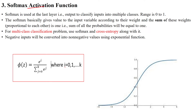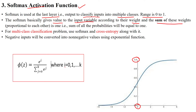The third one is the softmax activation function. The softmax layer is used as the output layer in neural networks to classify inputs into multiple classes. When using a neural network for multi-class classification, the output layer uses the softmax activation function, and its range is from 0 to 1. The softmax provides a value to each input variable according to its weight, and the sum of these weights proportionally is 1.